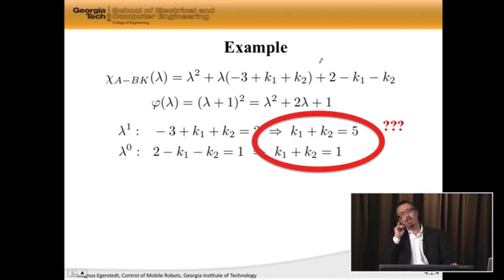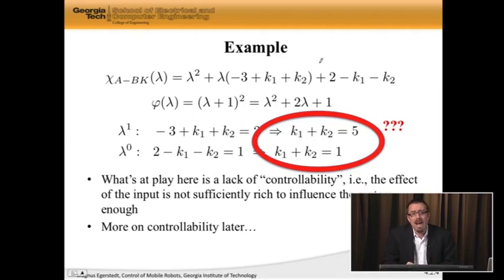Wait a second, this is trouble. k1 + k2 equals 5 and k1 + k2 equals 1. This doesn't seem promising. In fact, it's impossible. It can't be two things at the same time. We failed; we can't solve this.